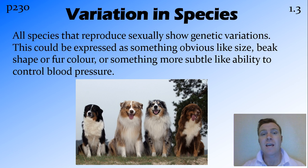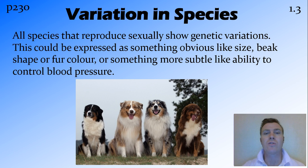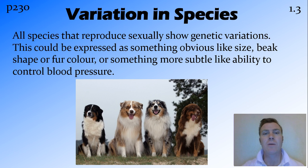These variations can be really obvious things like how big something is, what colour something is, markings — things like this. Or rather than on a physical level, it could be on a physiological level — so being able to control blood pressure, being able to convert sugar into energy a little bit better. Things like this.